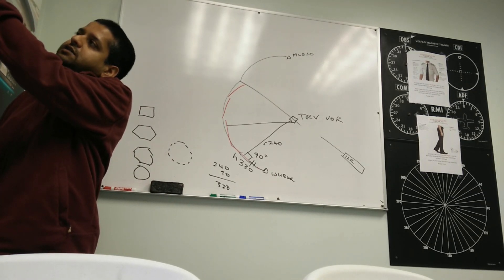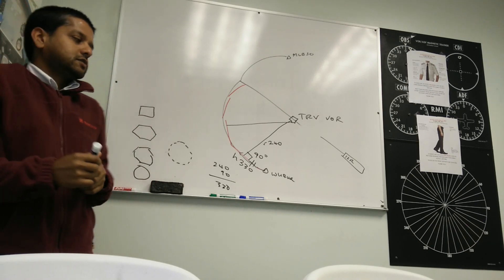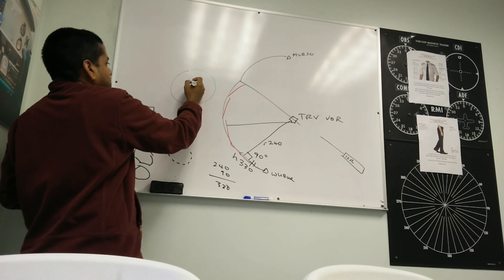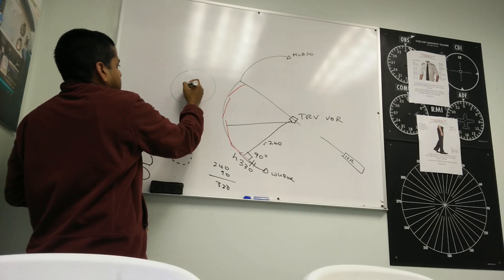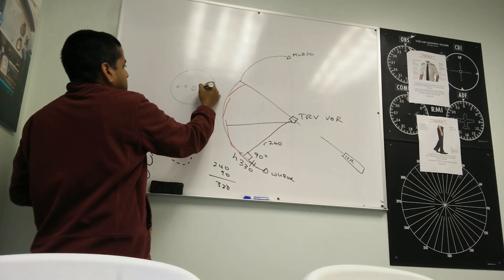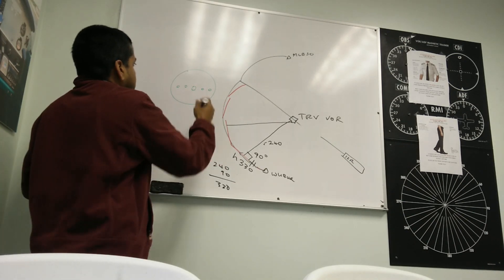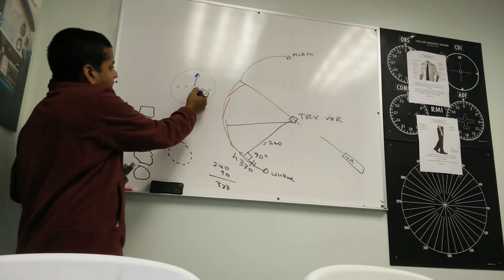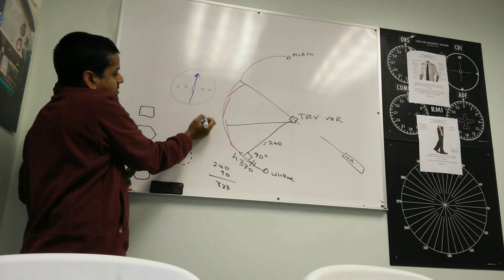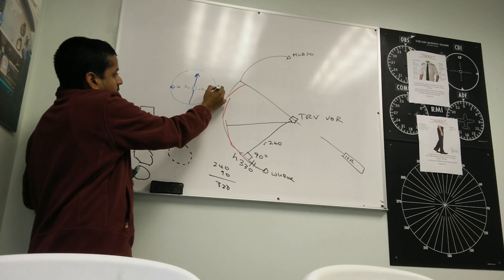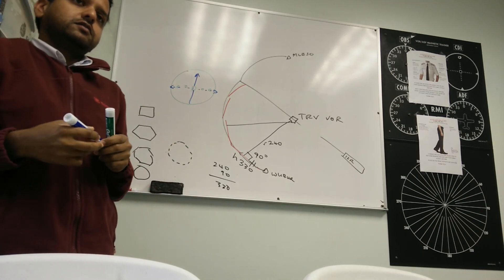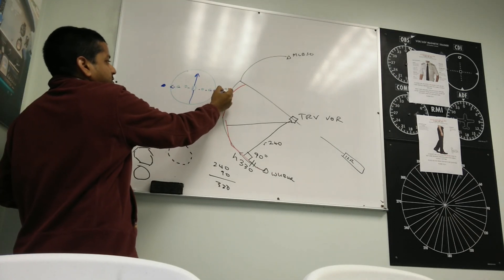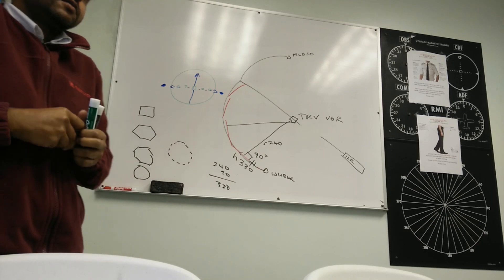Because if you look at your CDI over here, with the CDI centered, you have these dots on the right and on the left. So this is your VOR indicator. This is your CDI. With the CDI centered, you just have to look at the dots. And they can tell you what heading to fly. So if that's your radial, you'll either be flying this heading or you'll be flying this heading. Understand that?